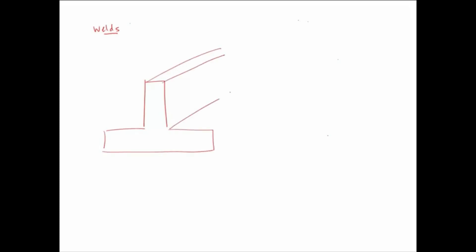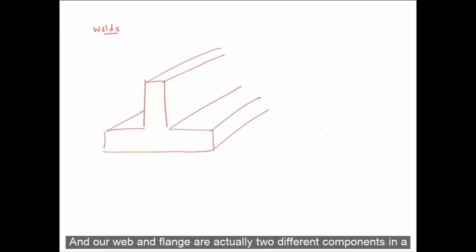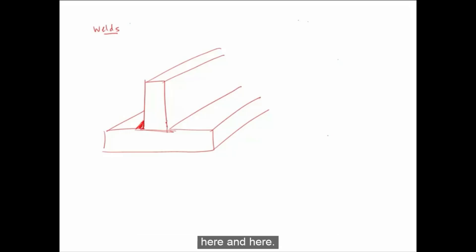And last but not least, we have welds. And welds run longitudinally with a beam. For example, if we have an inverted T section, and our web and flange are actually two different components in a built-up member, and we want to weld this together. So in our section, it would look like here and here. This weld would actually extend along the length of the beam.